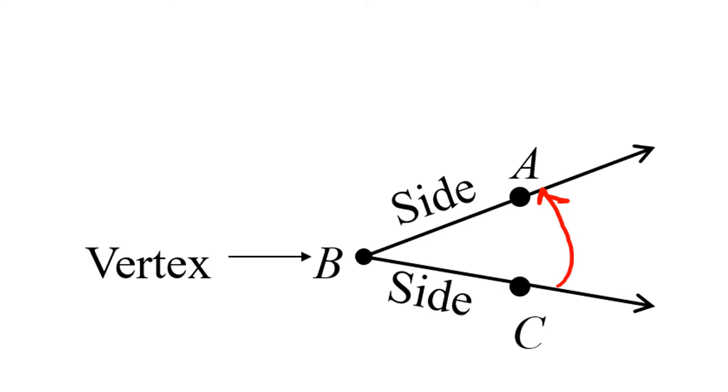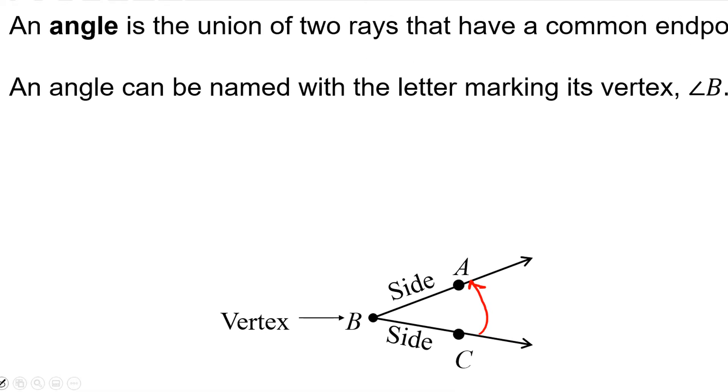An angle can be named with the letter marking its vertex. So this angle could be called angle B and we would put the symbol of an angle, which looks like a little angle itself, in front of the letter B.